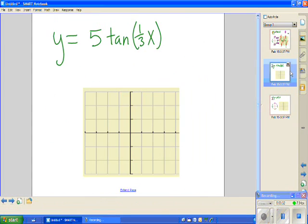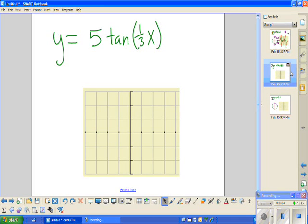Okay, how about we graph this one. Y equals 5 tangent of 1 third x. Alright, well, from what we learned before, we have pi divided by our angular speed, which turns out to be 3 pi as our period.